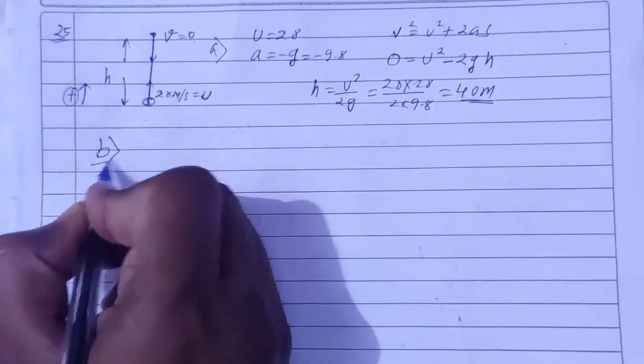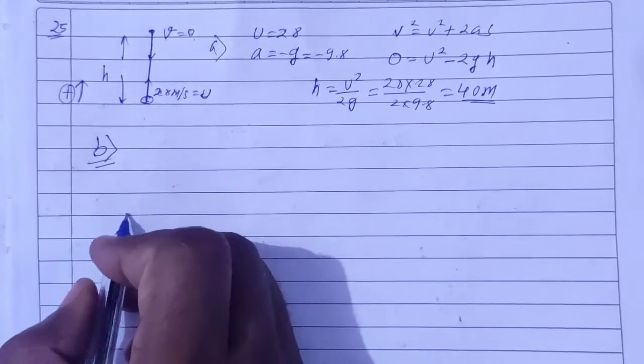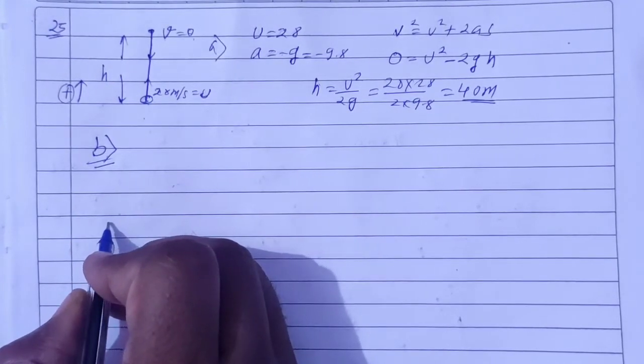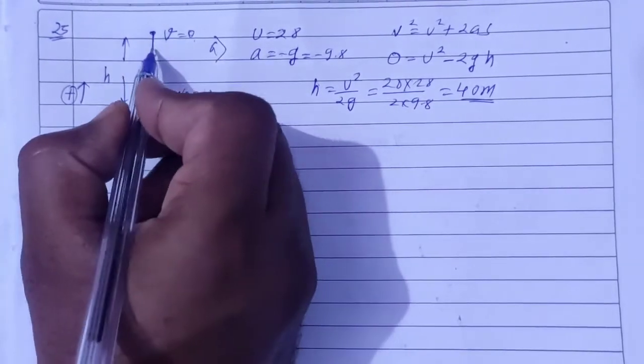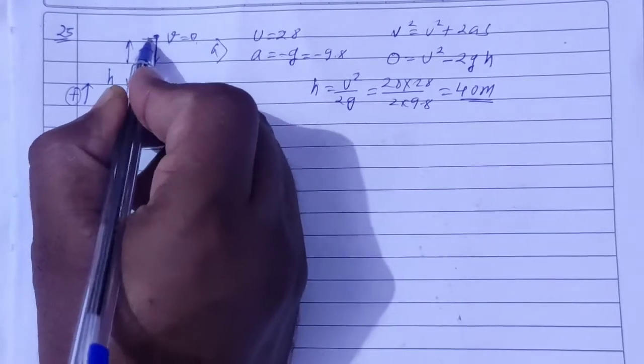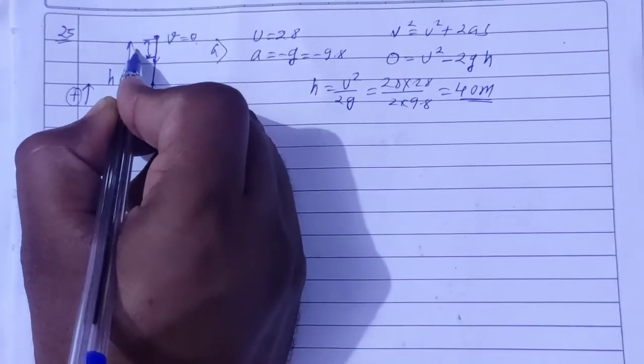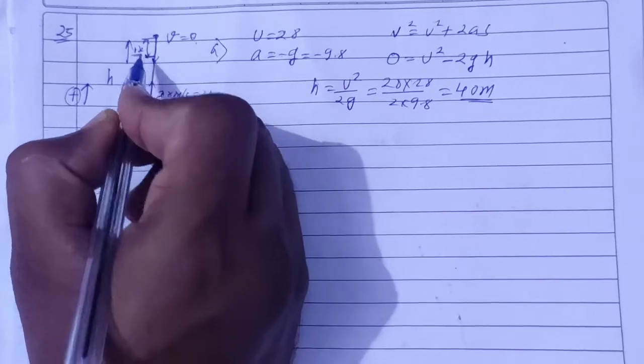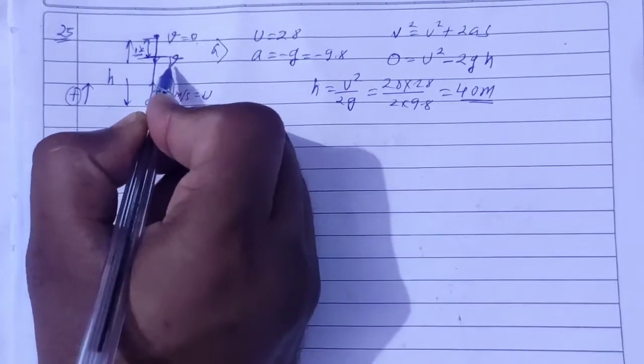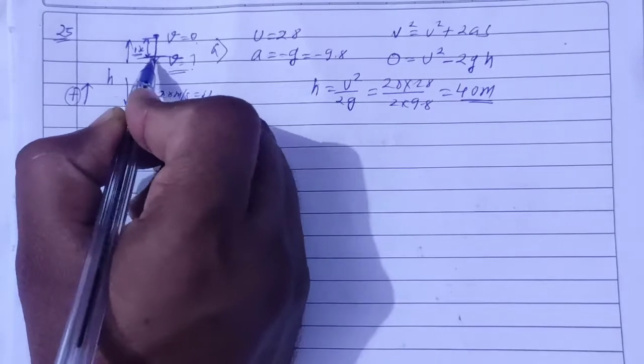Now in part b, we need to find the velocity 1 second before it reaches maximum height. That means 1 second before reaching the top, what was the speed? We need to find the speed 1 second before maximum height.